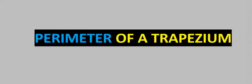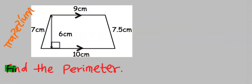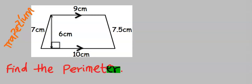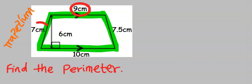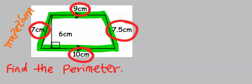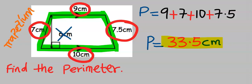Next, perimeter of a trapezium. To find the perimeter, we sum all four sides: 9 cm, 7 cm, 10 cm, and 7.5 cm. The height is not required. The perimeter is 33.5 cm.